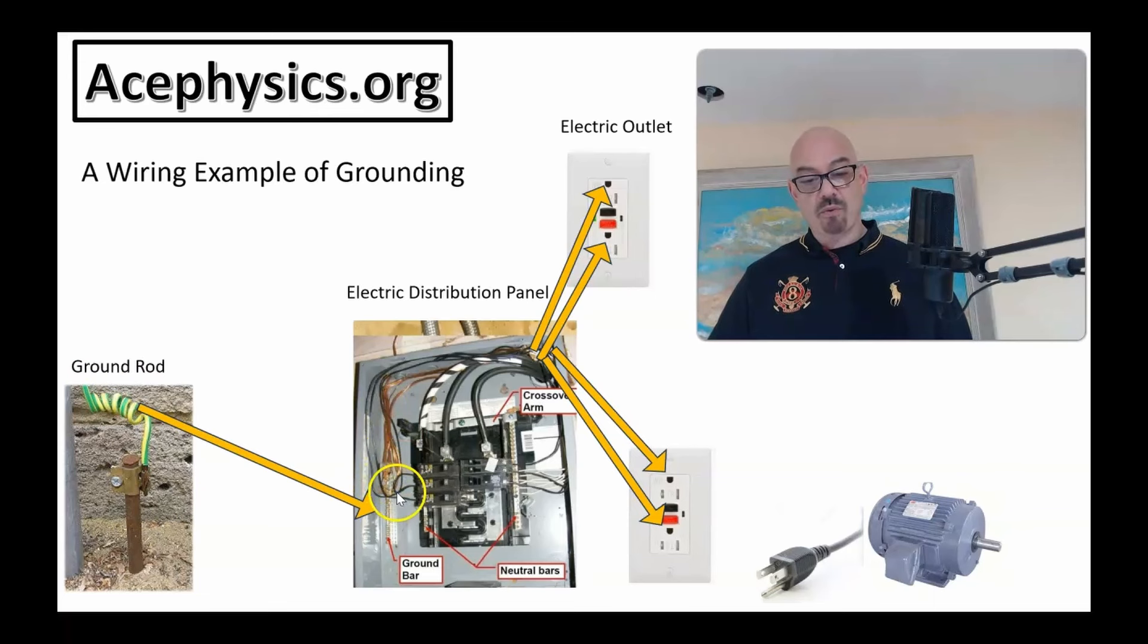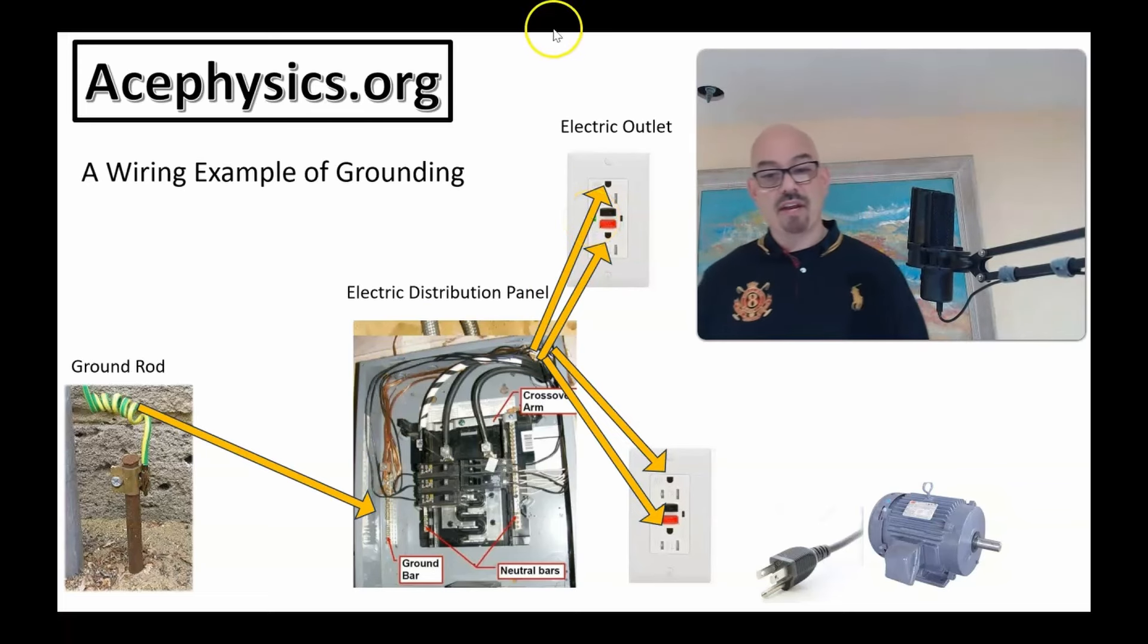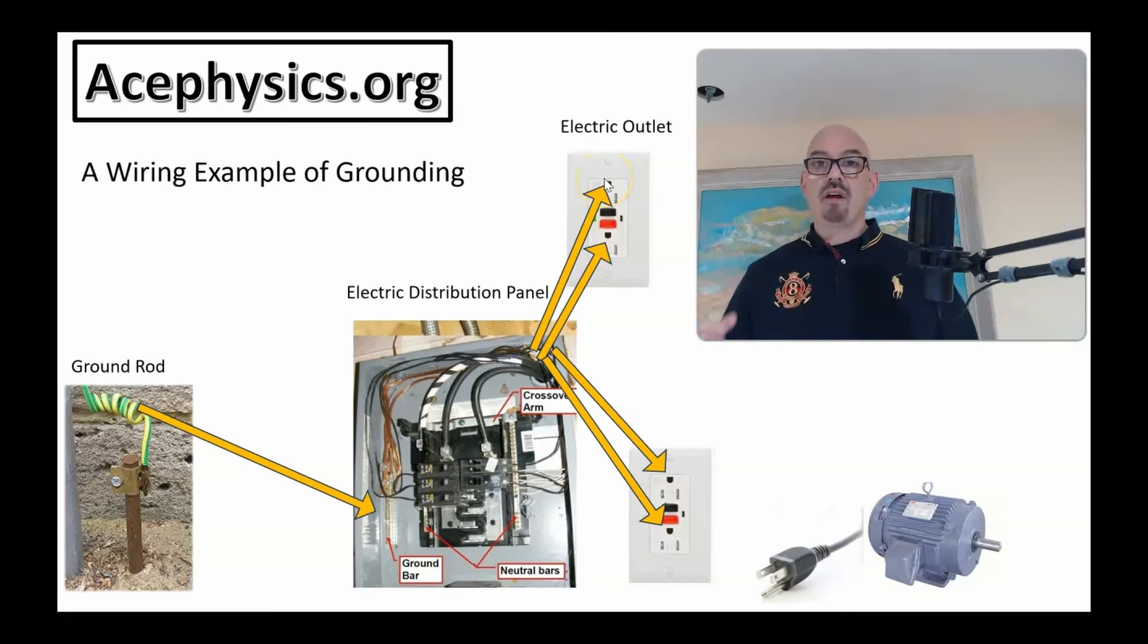And then there are copper wires which are attached to the grounding bar. And those copper wires are fed through the distribution box and they're led all throughout the house and attached to the third terminal on the electric outlet, which is known as the ground.